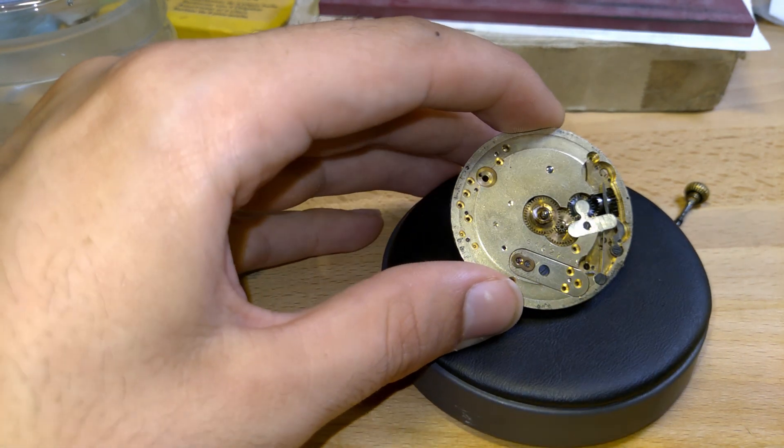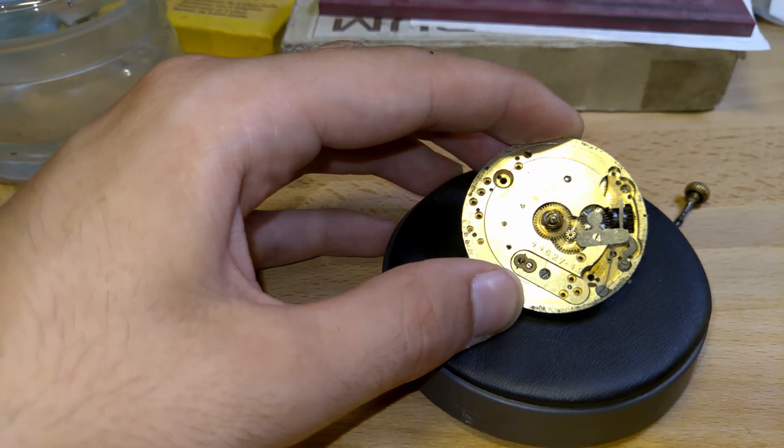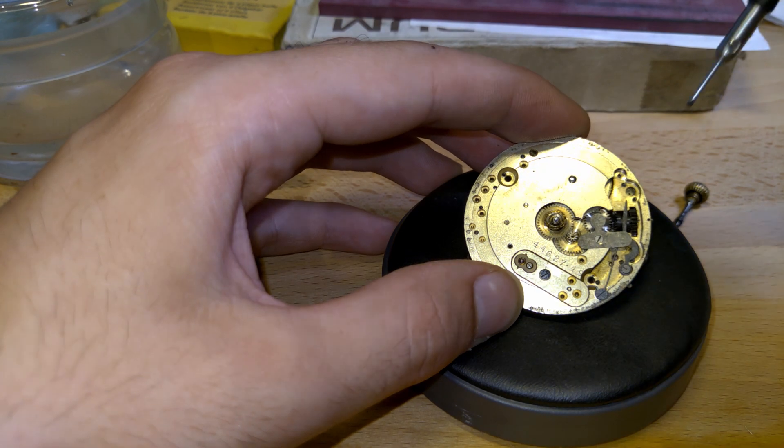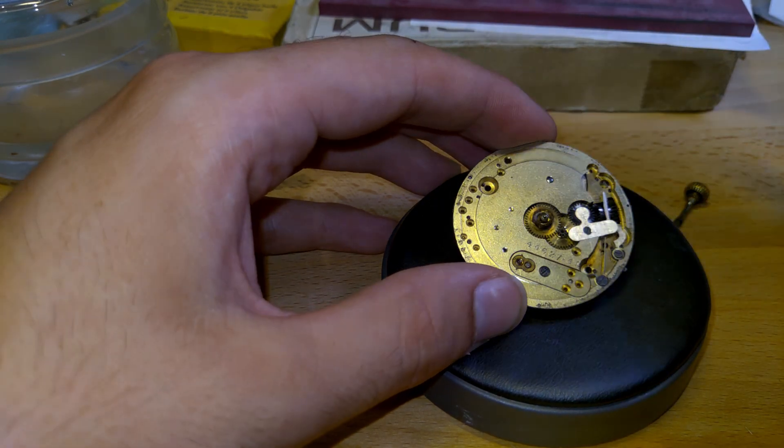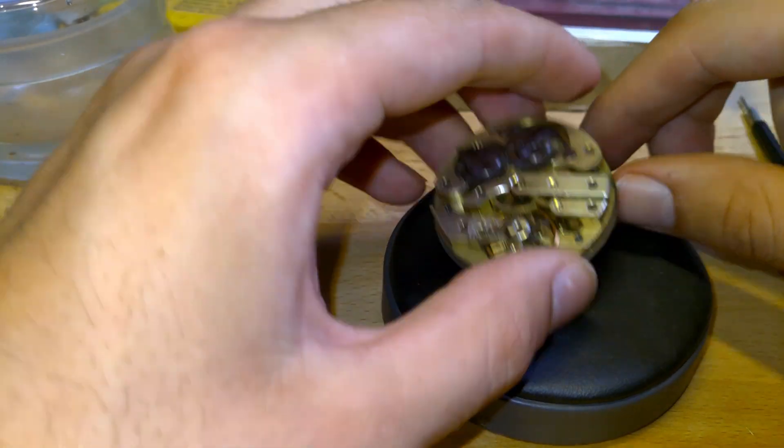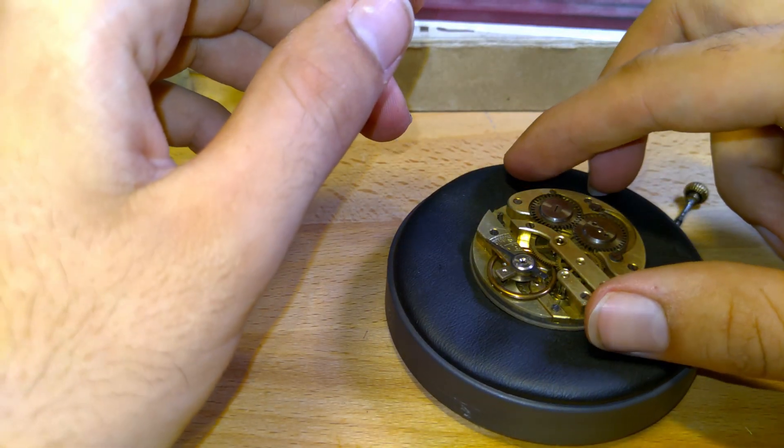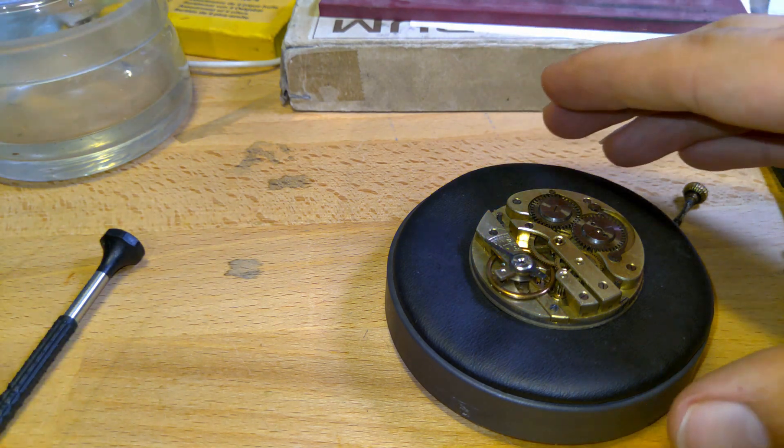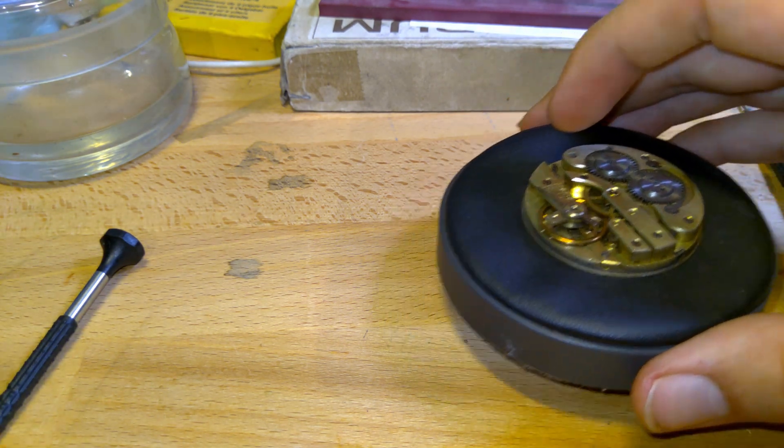So here we can see the mechanism to change between winding it or changing the stand of the dial. But yeah, back to the microscope to show you the escapement.